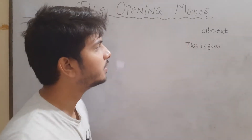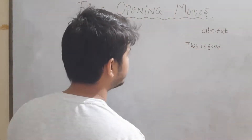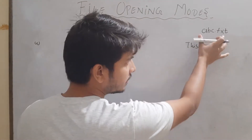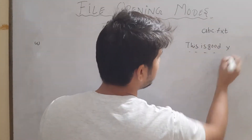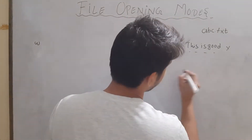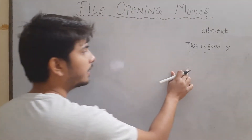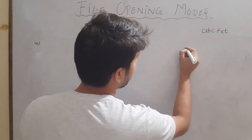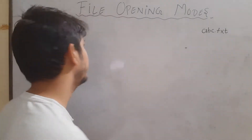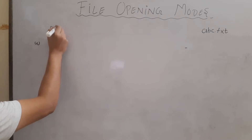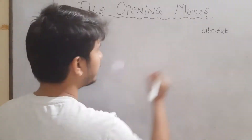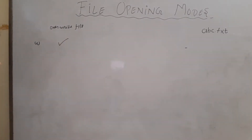First, let's suppose a file abc.txt exists and its contents are 'this is good'. When the file is opened in 'w' mode, every content present in the file is going to be erased. The file pointer will be at the start of the file. So basically, 'w' mode will overwrite the file — mark that as true.